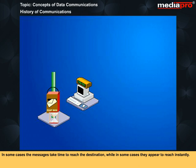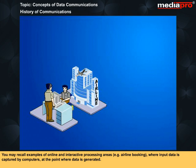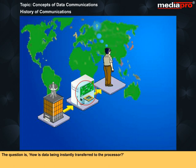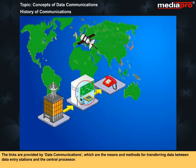In some cases the messages take time to reach the destination, while in some cases they appear to reach instantly. You may recall examples of online and interactive processing areas — for example, airline booking — where input data is captured by computers at the point where data is generated. Such processes involve data stations located at or near the data sources, which can be far away from the processor. The links are provided by data communications, which are the means and methods for transferring data between data entry stations and the central processor.